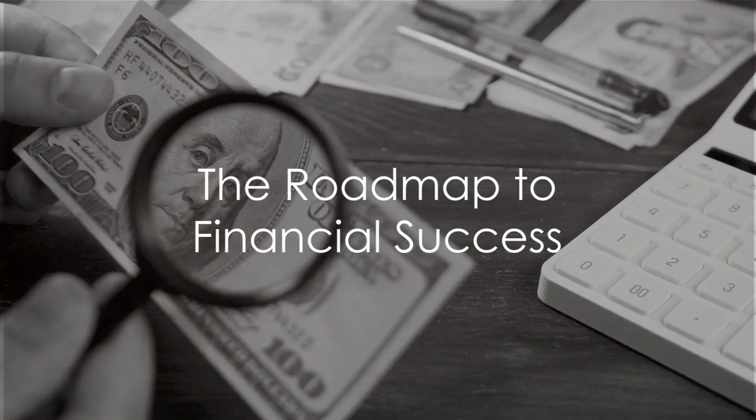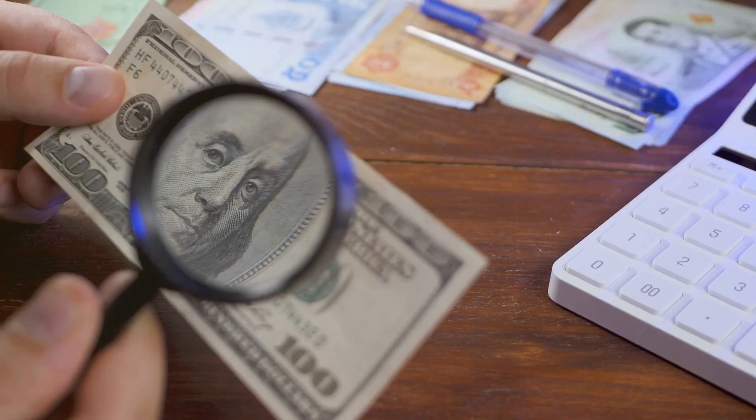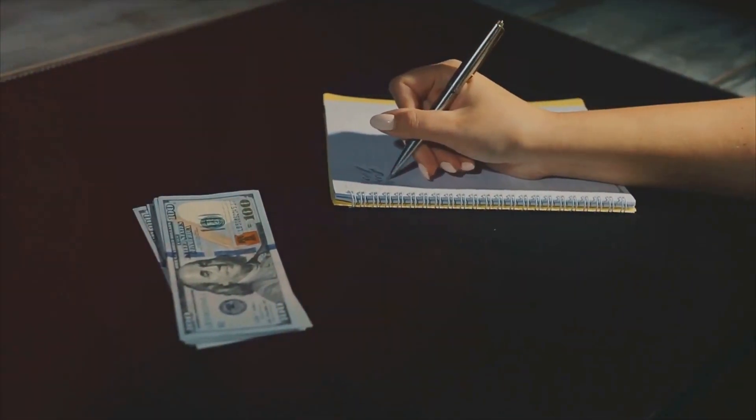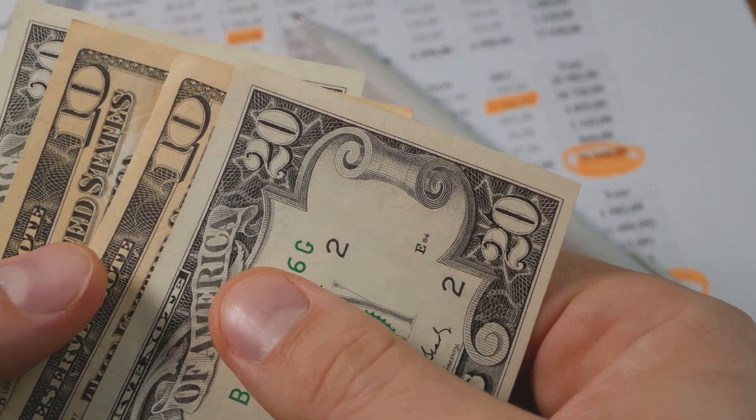First, let's tackle budgeting. Think of it as your roadmap to financial success. Start by tracking your income and expenses for a month. This will give you a clear picture of where your money is going.